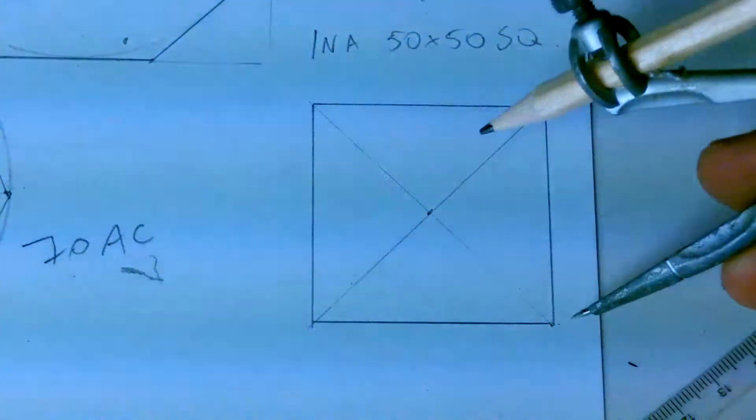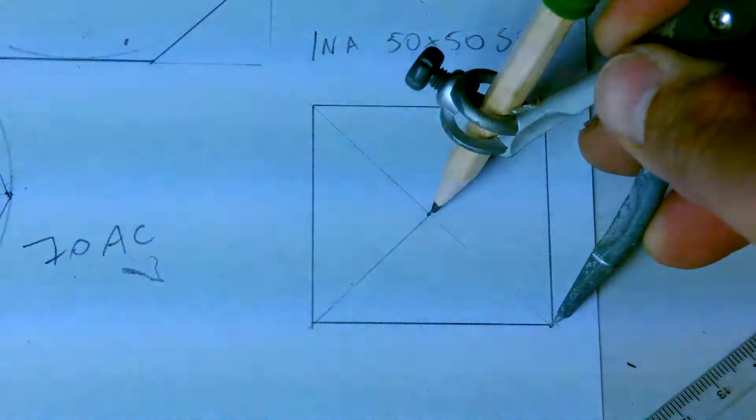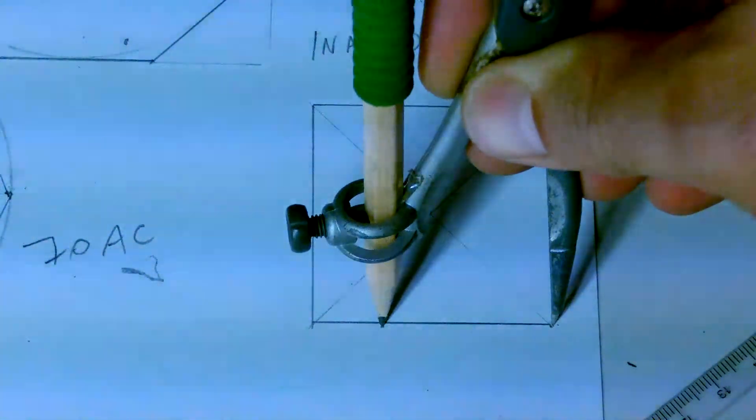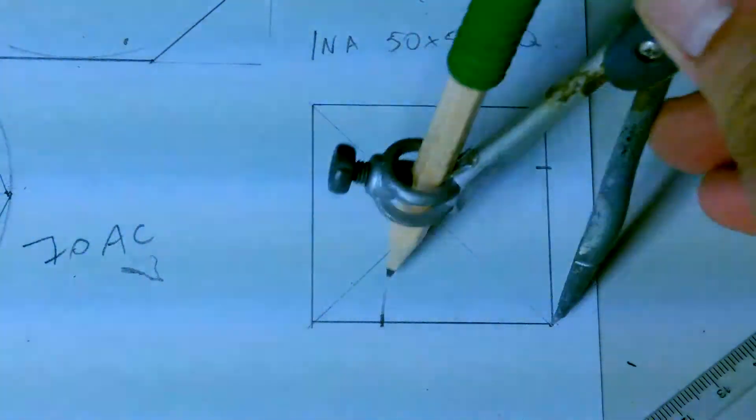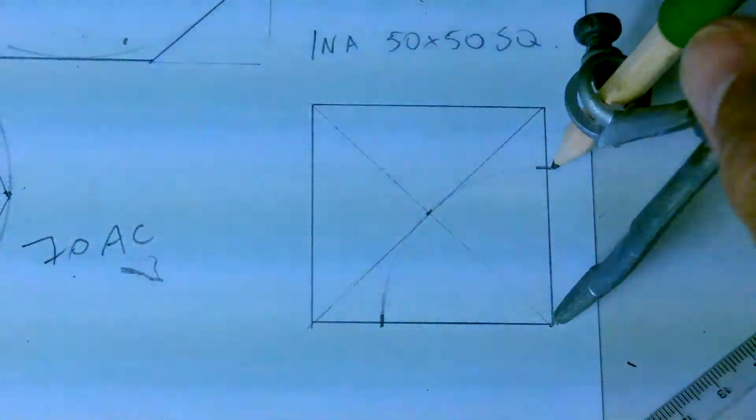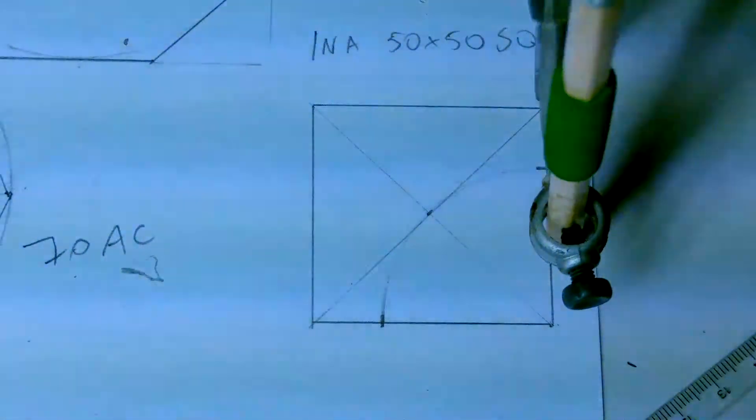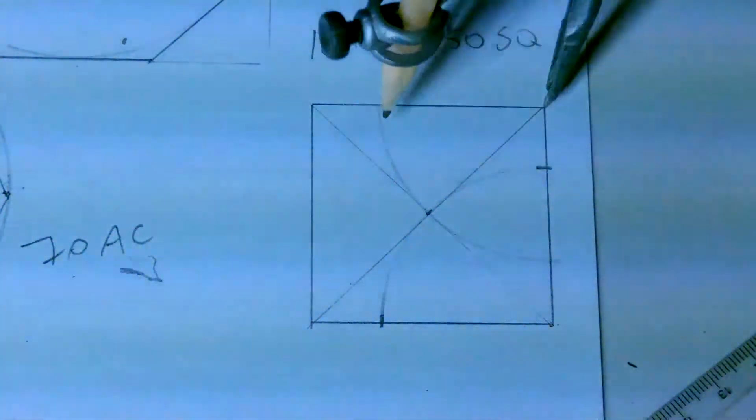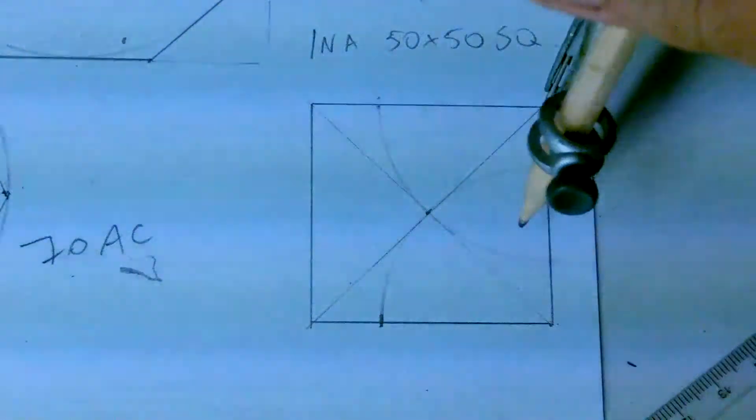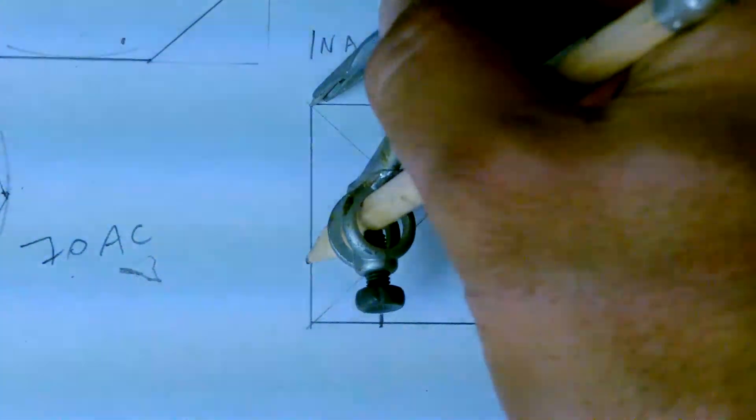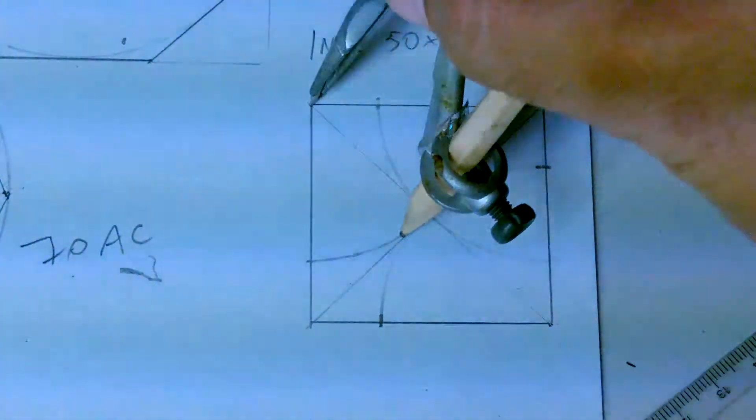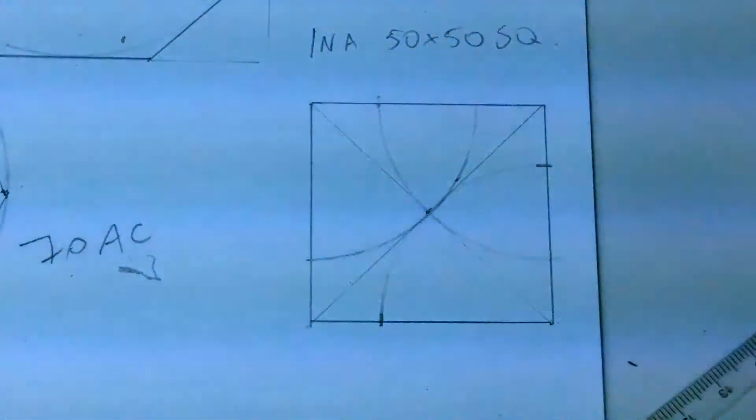Now all you need to do is go from each corner, open to the midpoint, and mark this side and this side, or you can just one arc mark those two points. If you do this from every point, from every corner, you'll get eight different points on each side, two on each side which makes a total of eight.